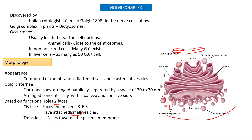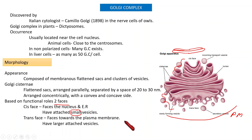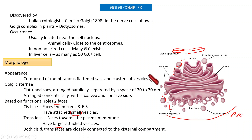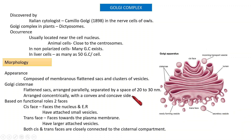The trans phase faces toward the plasma membrane, and its vesicles are large in size. Both the cis phase and the trans phase are closely connected to the cisternal compartment.